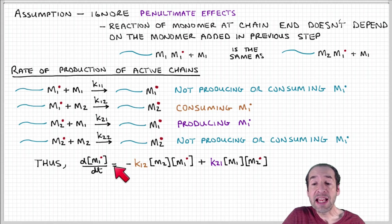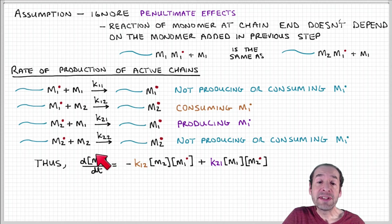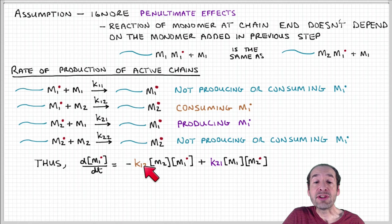We can write that in terms of a differential equation or a rate equation. The net rate of production of chains that are active that have monomer one at the end is equal to the rate at which these sites are consumed through this first cross reaction where we add monomer two.